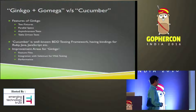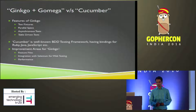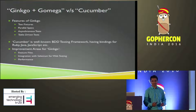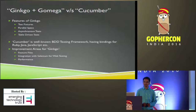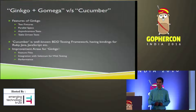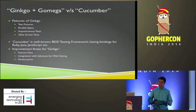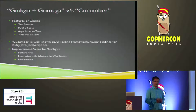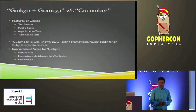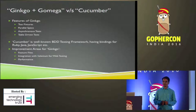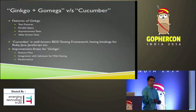But Ginkgo still needs some improvements. We need a feature file. Cucumber provides a feature file where your product owner or management provides user stories in plain English text that anybody can understand, and based on that you implement your test process and execute it. Ginkgo plus Gomega does not provide that. You can write specs, but they are kind of mixed up with your code, which makes it difficult for the product manager or management team to read.